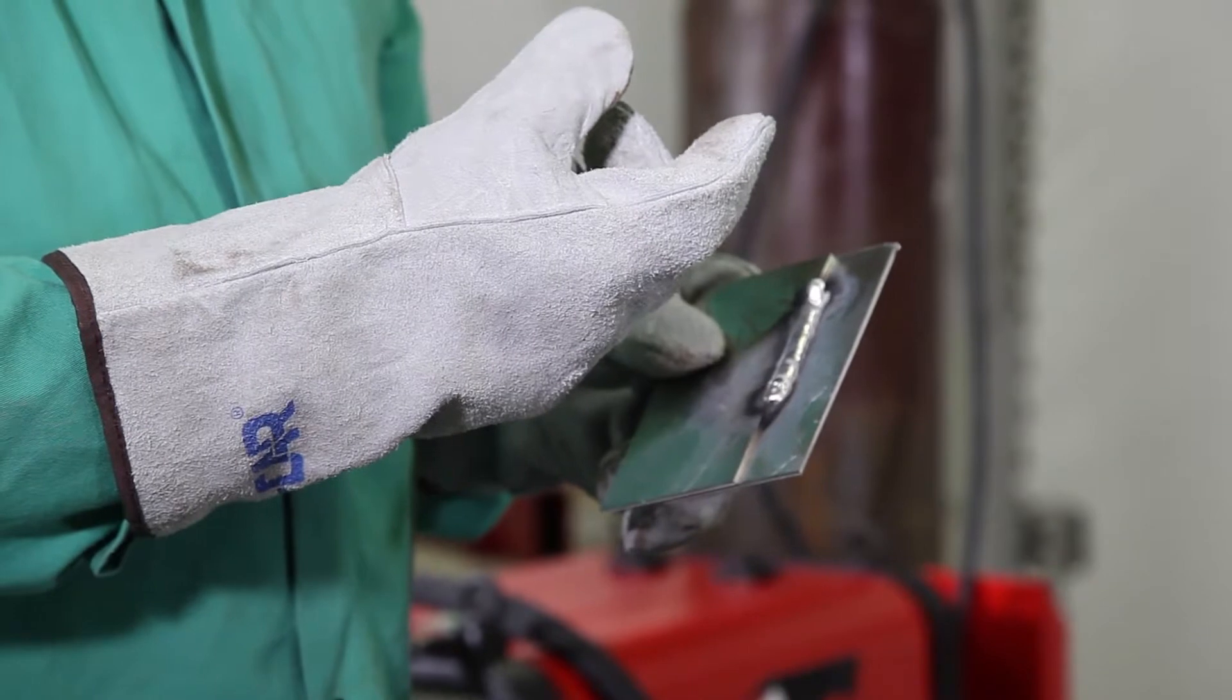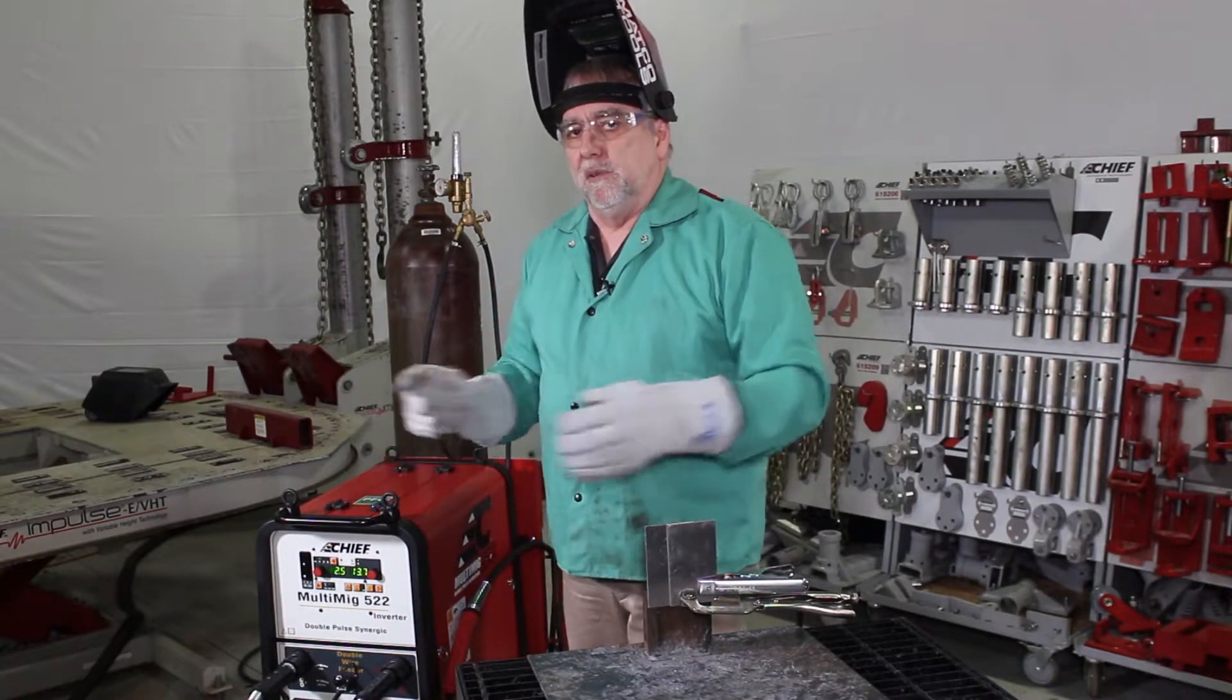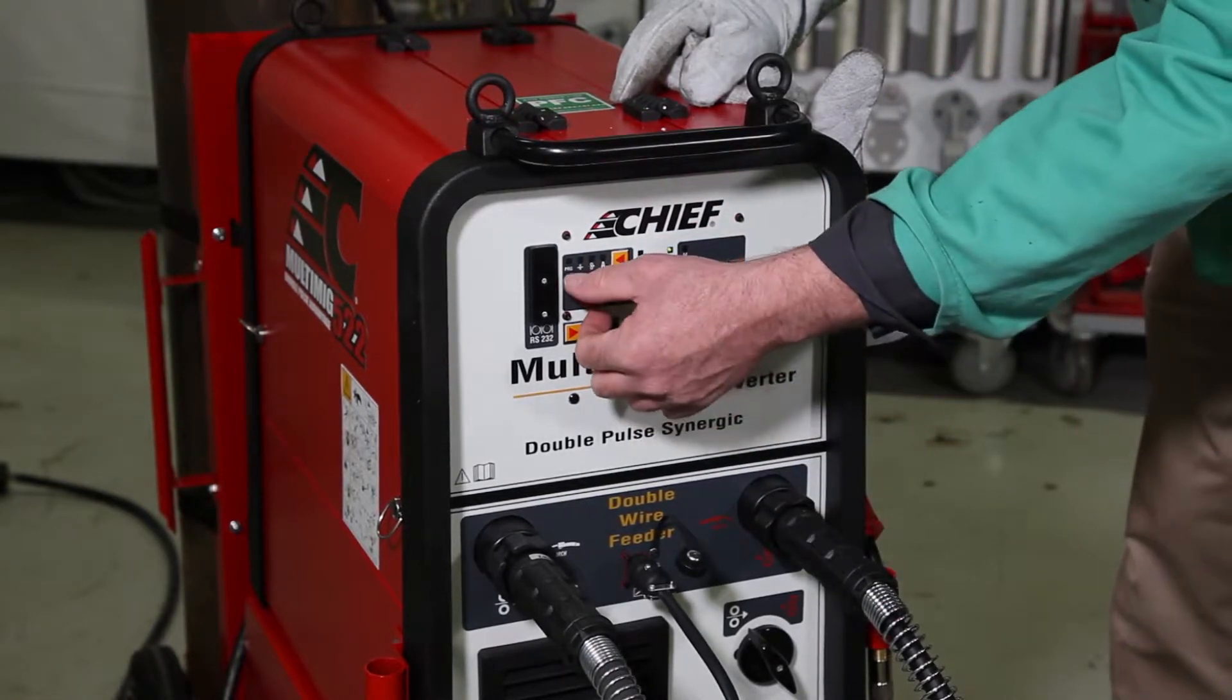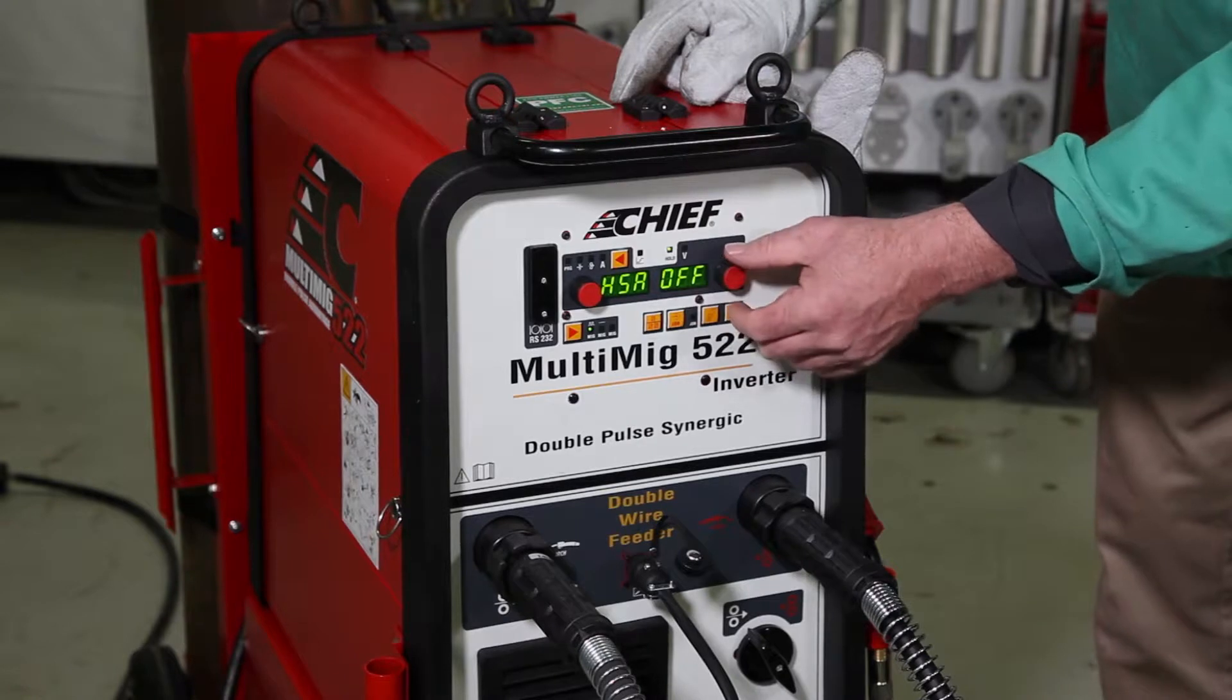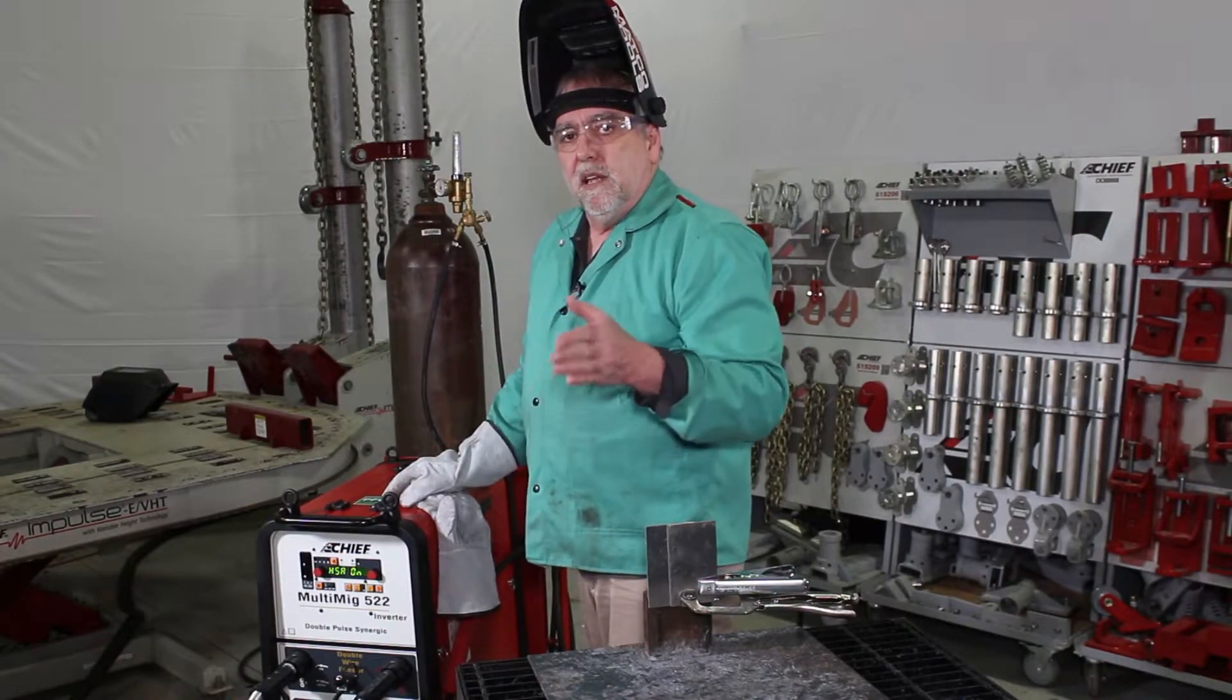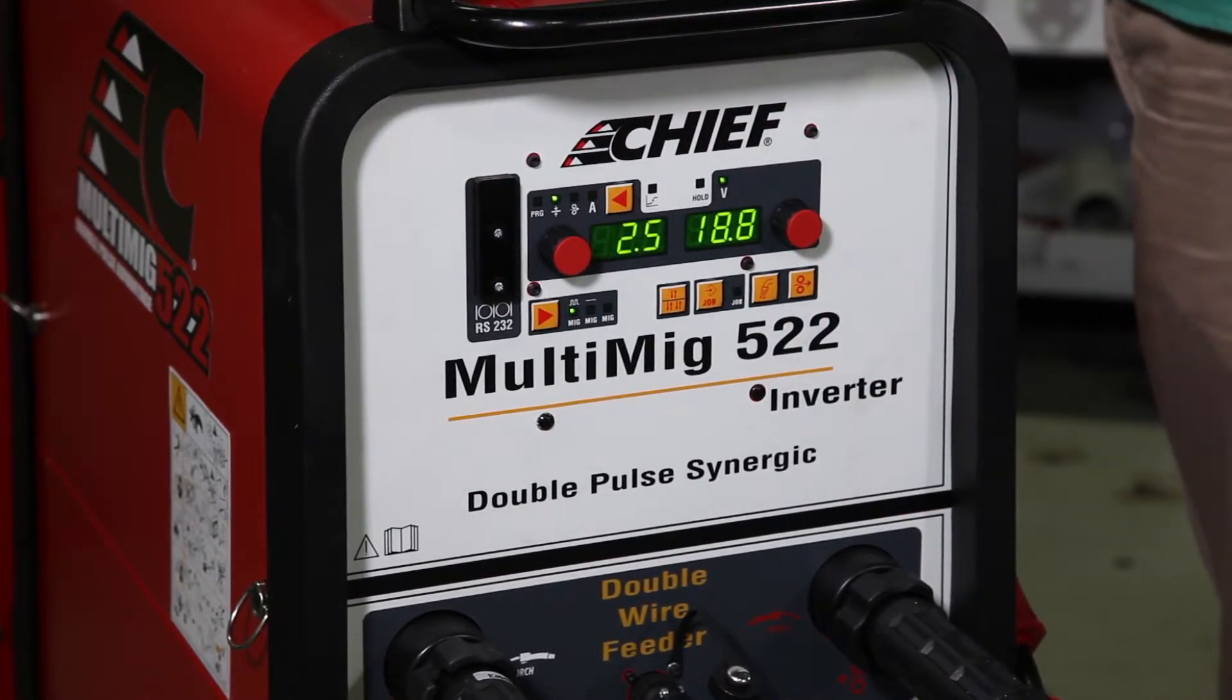Now let's do another weld but this time let's turn the hot start feature on and see what that does to help the beginning of our weld out. To turn the hot start feature on, push and hold the AE key for three seconds to get into the sub menus. Use this knob to toggle through so you get to HSA for hot start. Turn the right knob to go from off to on. The other parameters that we can set in here we're going to leave alone and use the default settings in the machine. For this we're going to punch the AE key one more time, put us back into the screen that we were using before for our display, and make another weld.